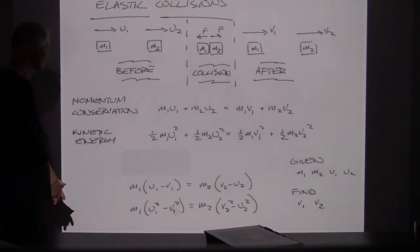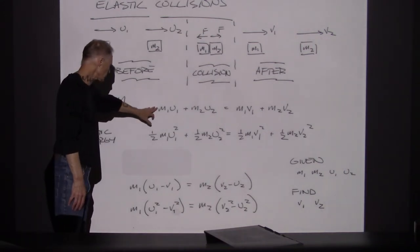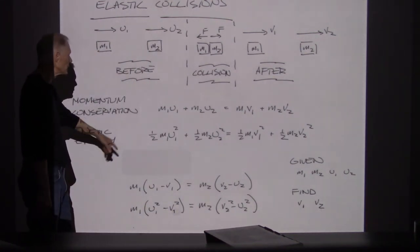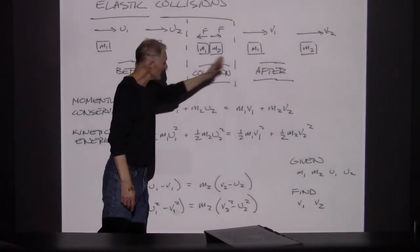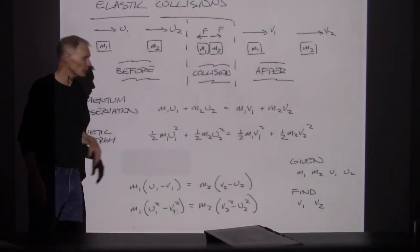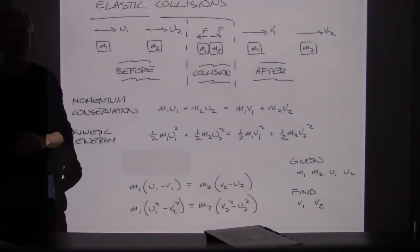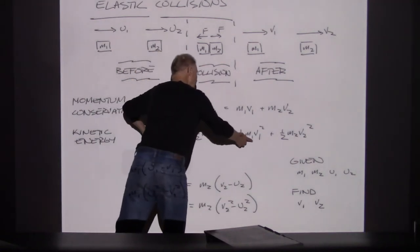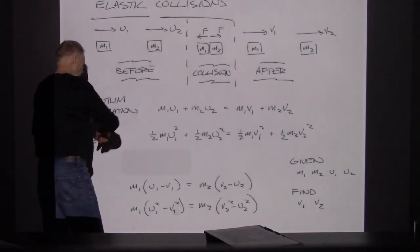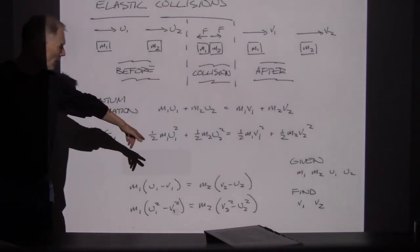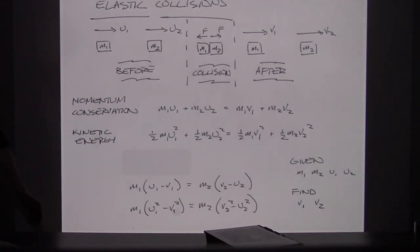What we can do is take the first equation and bring the two terms with M1 to one side and the two terms with M2 to the other. With kinetic energy, we can drop the one half everywhere and do the same thing. The upper equation is momentum conservation, the lower one is kinetic energy conservation.